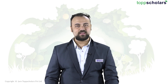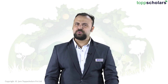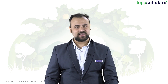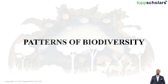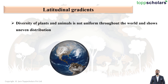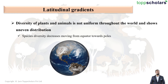Hello students and welcome to Top Scholars. Today we will be talking about patterns of biodiversity. Let us first talk about latitudinal gradients and how it affects biodiversity. On our planet, the diversity of plants and animals is not uniform throughout the world — it shows an uneven distribution.